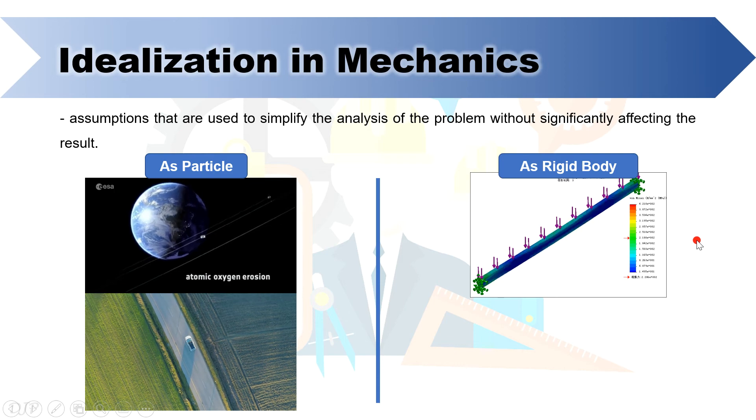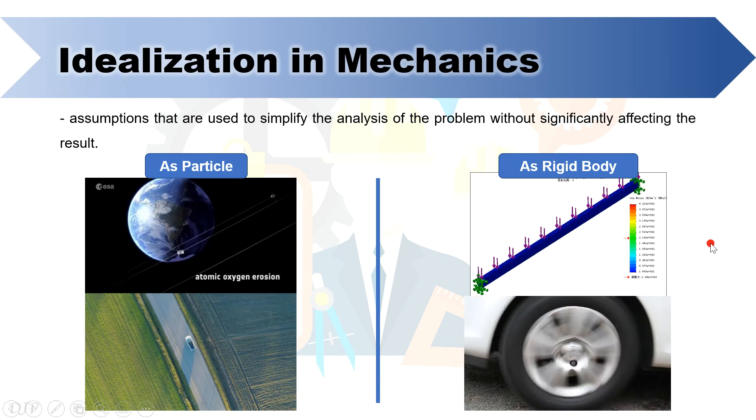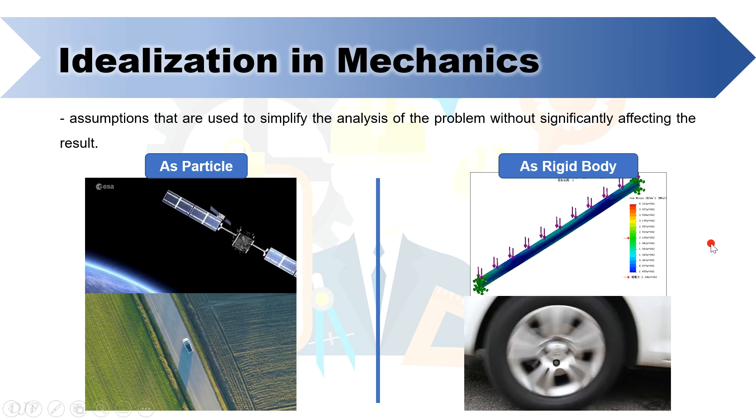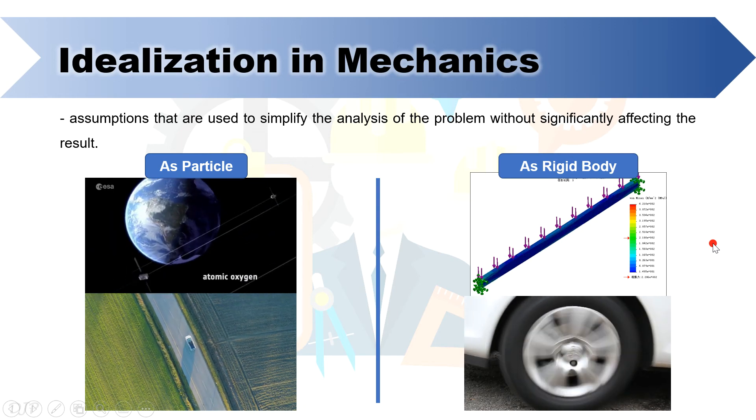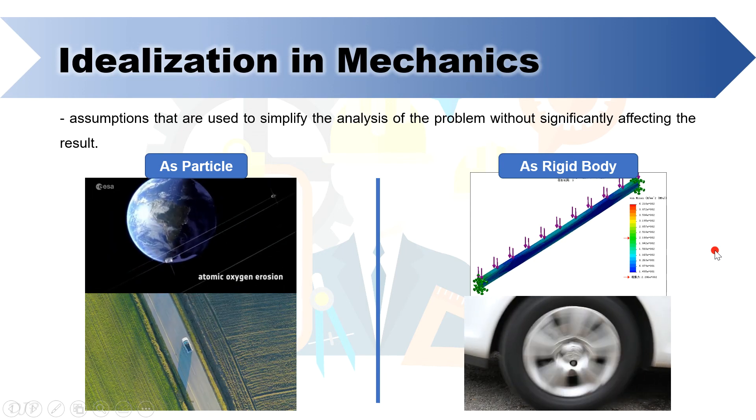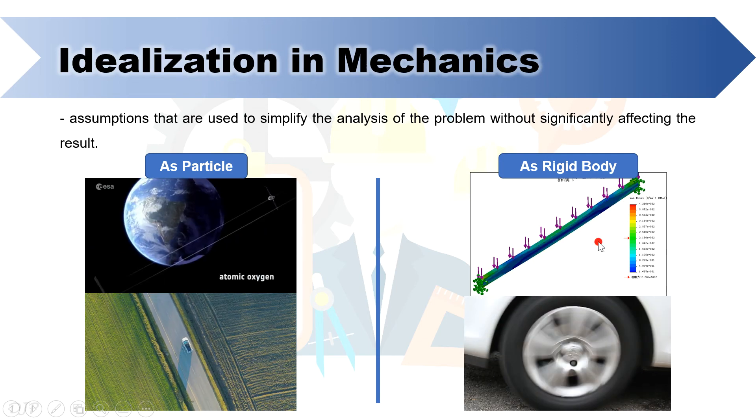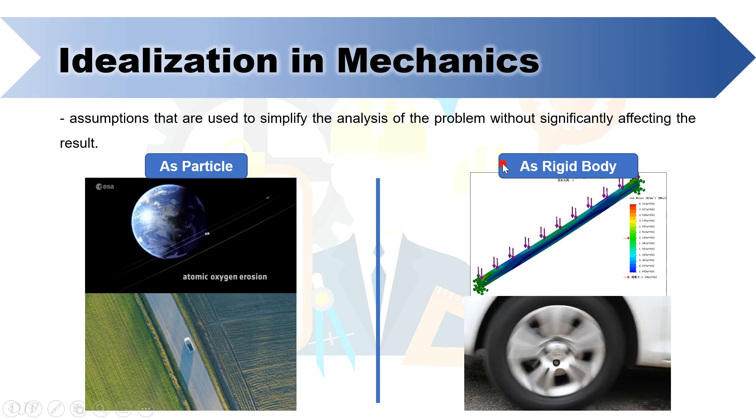So now another example is the spinning tire. We can consider the tire as rigid body since the deformation can be very small or neglected. So remember always in this subject, we will only deal with objects that can be idealized as either particle or rigid body.